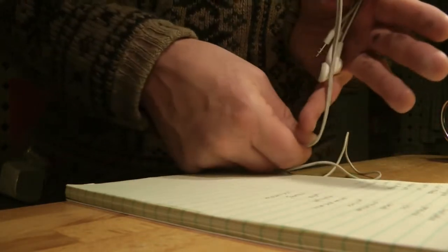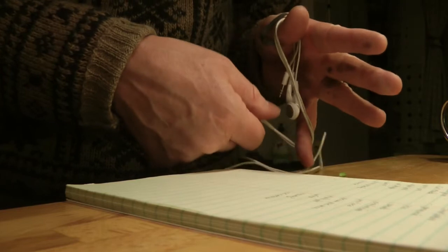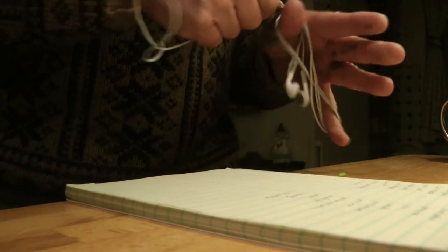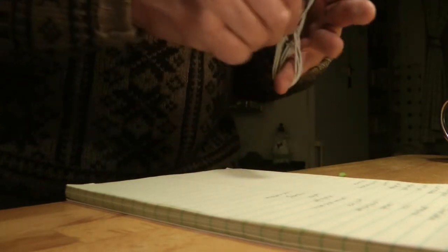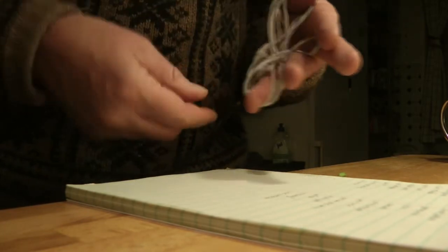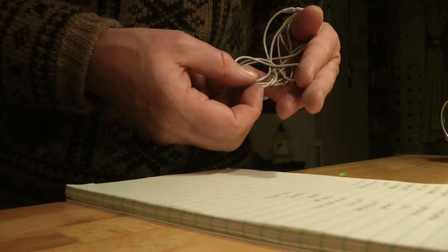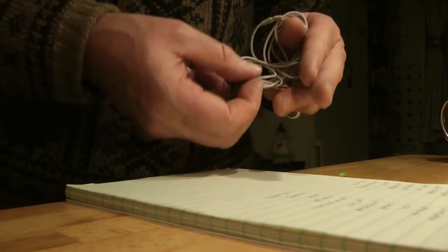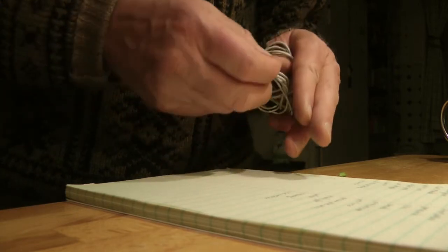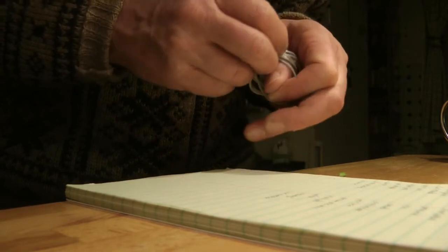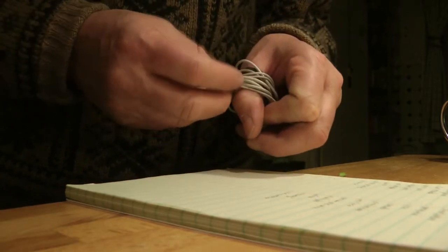Then you want to wrap around in a figure eight like this. Only takes a second. I'm doing it in slow motion, later it'll be really fast. Then you bring this coil, the bottom coil, you bring it up and loop it over your thumb. So now you've got them all here.